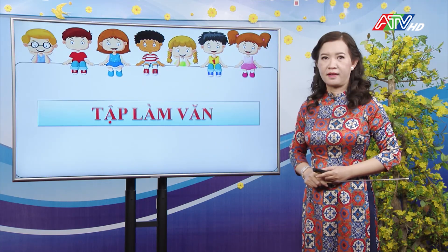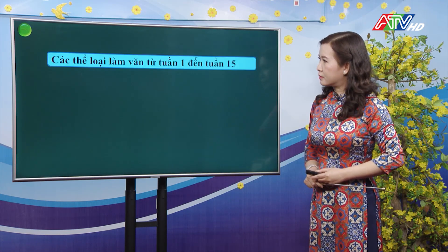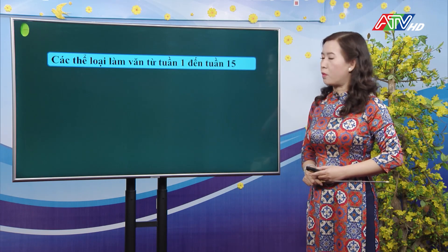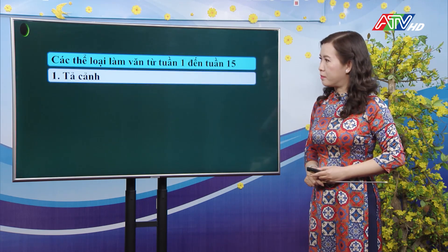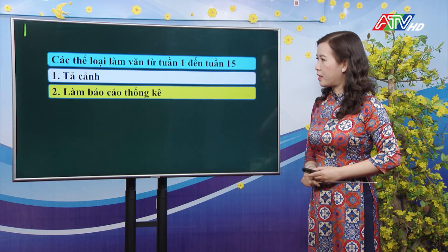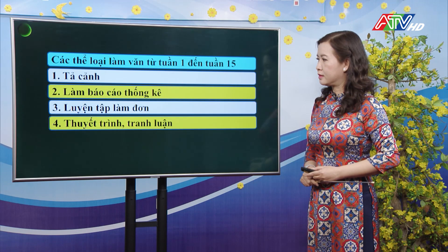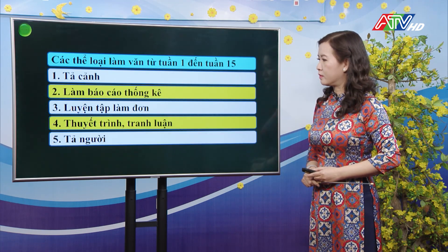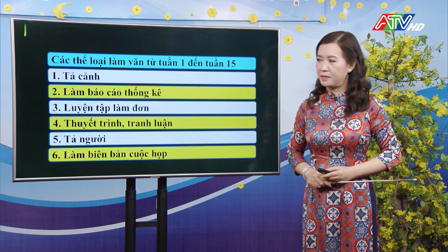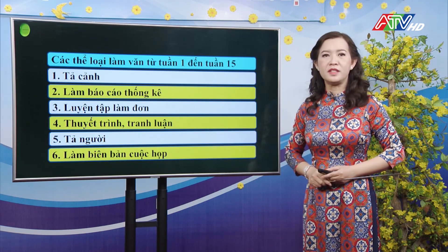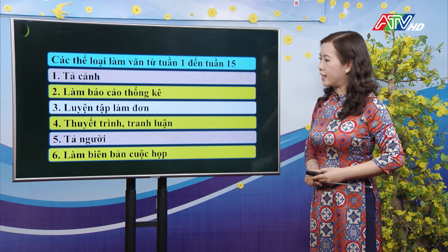Ở phân môn tập làm văn, các thể loại từ tuần 1 đến tuần 15 gồm có: tả cảnh, làm báo cáo thống kê, luyện tập làm đơn, thuyết trình tranh luận, tả người, và làm biên bản cuộc họp. Trong 6 thể loại này, các con lưu ý 2 thể loại là tả cảnh và tả người.